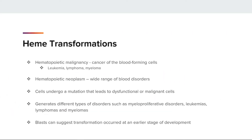Hemopoietic malignancies are cancers of the blood forming cells, while hemopoietic neoplasms encompass a wide range of blood disorders. Any cell can undergo a mutation that leads to a dysfunctional or malignant cell instead of a healthy cell. Depending on what stage of differentiation the cell is in when it makes the transformation, this will generate different types of disorders such as myeloproliferative disorders, leukemias, lymphomas, and myelomas.